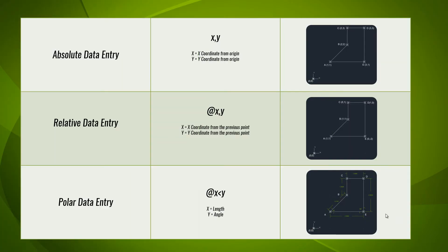First, we have the absolute data entry method. Absolute data entry method is the basic form of entering data in AutoCAD. It is the same as marking coordinates as we do in the graph method. The basic format is x,y — where x is the x coordinate from the origin and y is the y coordinate from the origin.